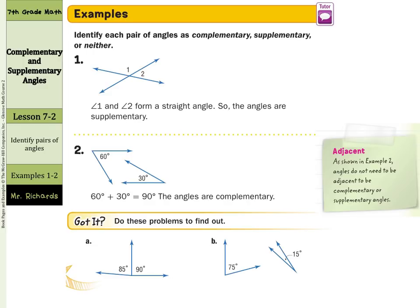So using that, let's see if we got it. In example A, we have 85 degrees and 90 degrees. Well, if I take those two angles and add them up, 85 and 90, I end up with 175 degrees. Well, it needs to be 90 degrees for complementary and they need to add up to 180 degrees to be supplementary. So our answer for A is actually neither.